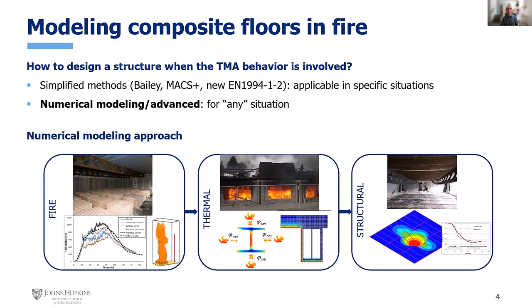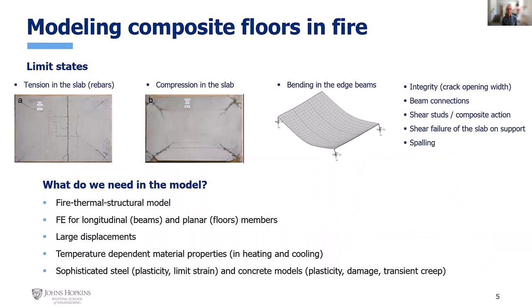Whenever in a design we are in a non-traditional situation — maybe the geometry is not regular or other reasons — to model a structure in fire, it is a three-step process. We need a model for the fire action, a model for the heat transfer to compute the thermal response, and then the model for the structural response. Specifically, for a composite floor exposed to fire and working in tensile membrane action, there are different failure modes that can develop: excessive tension in the slab with rupture of the rebar showing up as a large crack transversally in the slab, failure due to excessive compression and crushing in the slab, bending in the edge beams, integrity failure, flame leakage, and problems in the connections and shear studs.